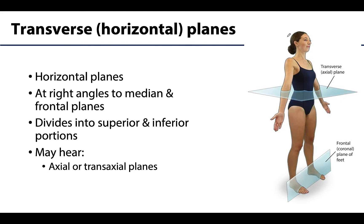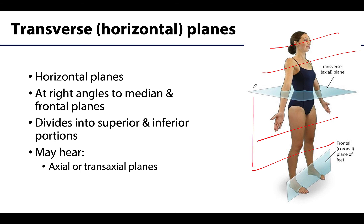Lastly, the only horizontal planes are the aptly named horizontal or transverse planes, which run at right angles to both the frontal and the median planes. This image shows just one transverse plane, but you can have them anywhere throughout the body. These divide the body into superior and inferior portions. You may hear transverse planes referred to as axial or trans-axial planes, particularly in radiology.